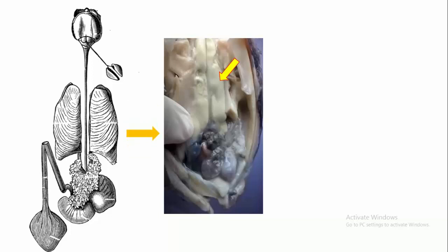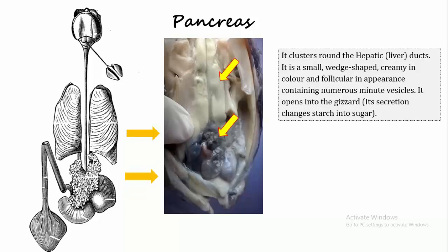Now let's talk about the pancreas. The pancreas clusters around the hepatic duct, that is the duct coming from the liver and attaching to the stomach. These pancreas are small, wedge shaped, creamy in color, and follicular in appearance, containing numerous minute vesicles. It opens into the gizzard.